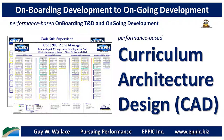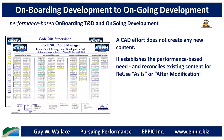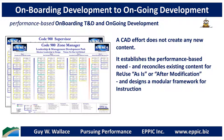Curriculum architecture design is also known as CAD. A curriculum architecture design effort does not create any new content — it really just establishes what the performance-based requirements are, what the enabling knowledge and skills are required to perform, and then it assesses existing content for its reuse potential, either as-is or after modification. It takes all of that data and designs a modular set of instructional systems that addresses the authentic performance requirements back on the job.